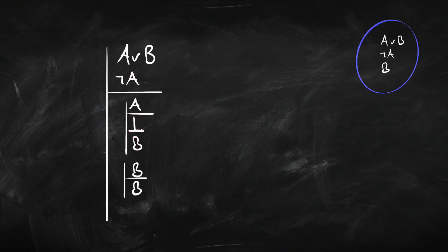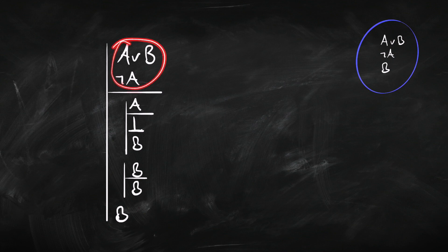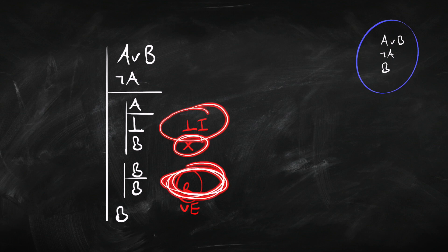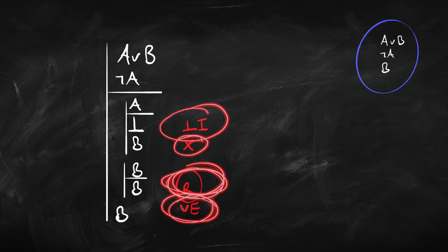Then we do the second bit of reasoning by cases: we assume B, and since we've assumed B we can have B here by repetition. So we reasoned by cases, inferred B in each case, and that gives us B overall. So from these premises we infer B — but we didn't use disjunctive syllogism to infer that, we just used our existing rules: the introduction rule for falsum, our explosion rule, repetition, and or-elimination.